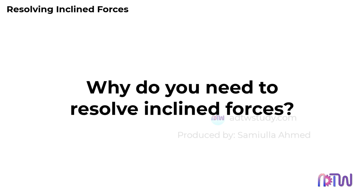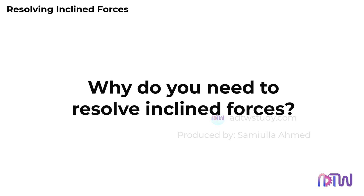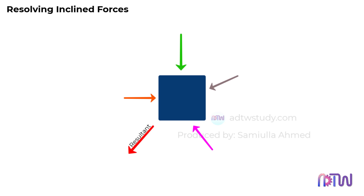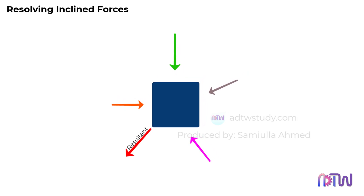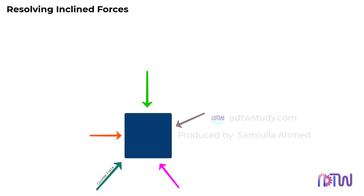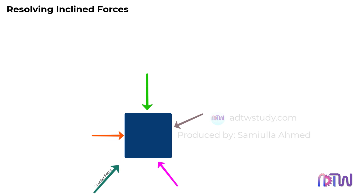Why do we need to resolve inclined forces? Before we dive into the process, let's understand why resolving inclined forces is necessary. In engineering, whenever multiple forces are acting on a body or system, we need to determine the resultant force. This resultant force shows us the combined effect of all the forces and the direction in which they will move the body. By understanding the resultant force, we can apply an equal and opposite force, known as a counterforce, to keep the system stable. This is crucial in designing and analyzing structures, machinery, and various mechanical systems to ensure they function safely and effectively.